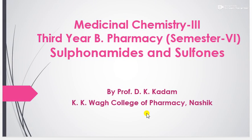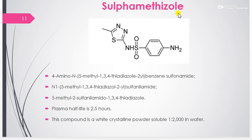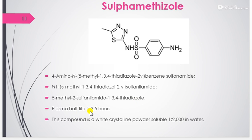In today's video lecture we are going to study some drugs from the sulfonamides. Our first drug is sulfamethizole. The IUPAC nomenclature is 4-amino-N-(5-methyl-1,3,4-thiodiazol-2-yl)-benzenesulfonamide, also known as 5-methyl-2-sulfanilamido-1,3,4-thiodiazol. Sulfamethizole has a plasma half-life of 2.5 hours. This compound is a white crystalline powder, soluble 1 in 200 in water.